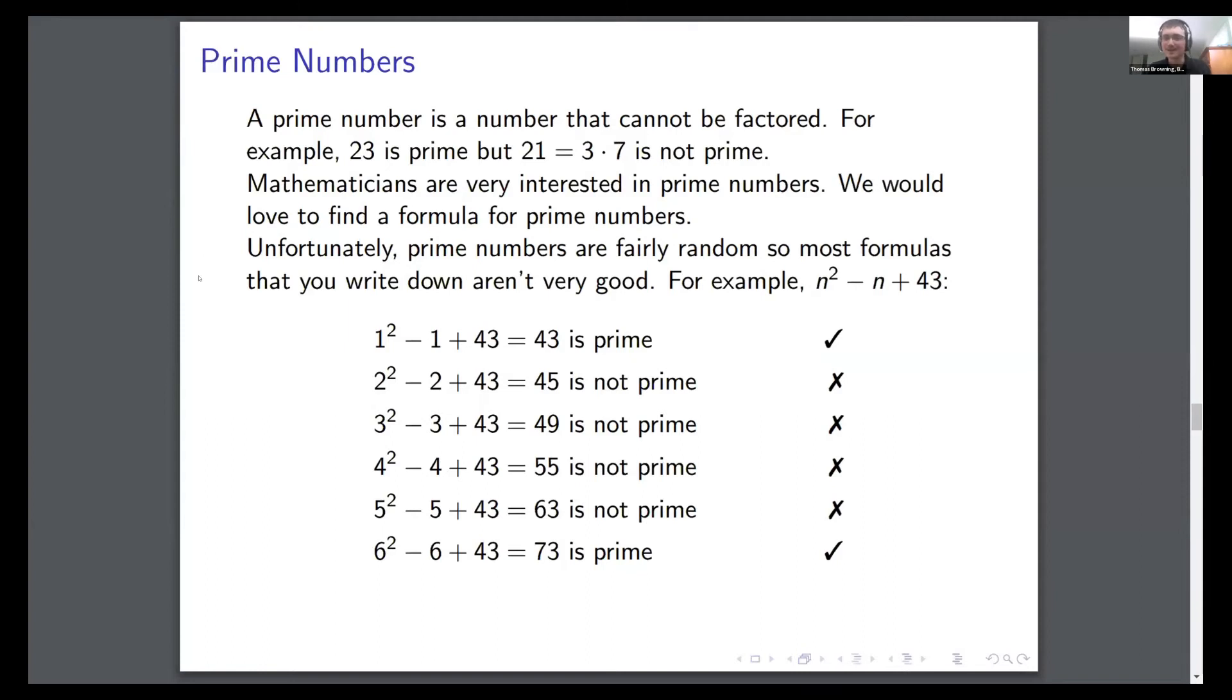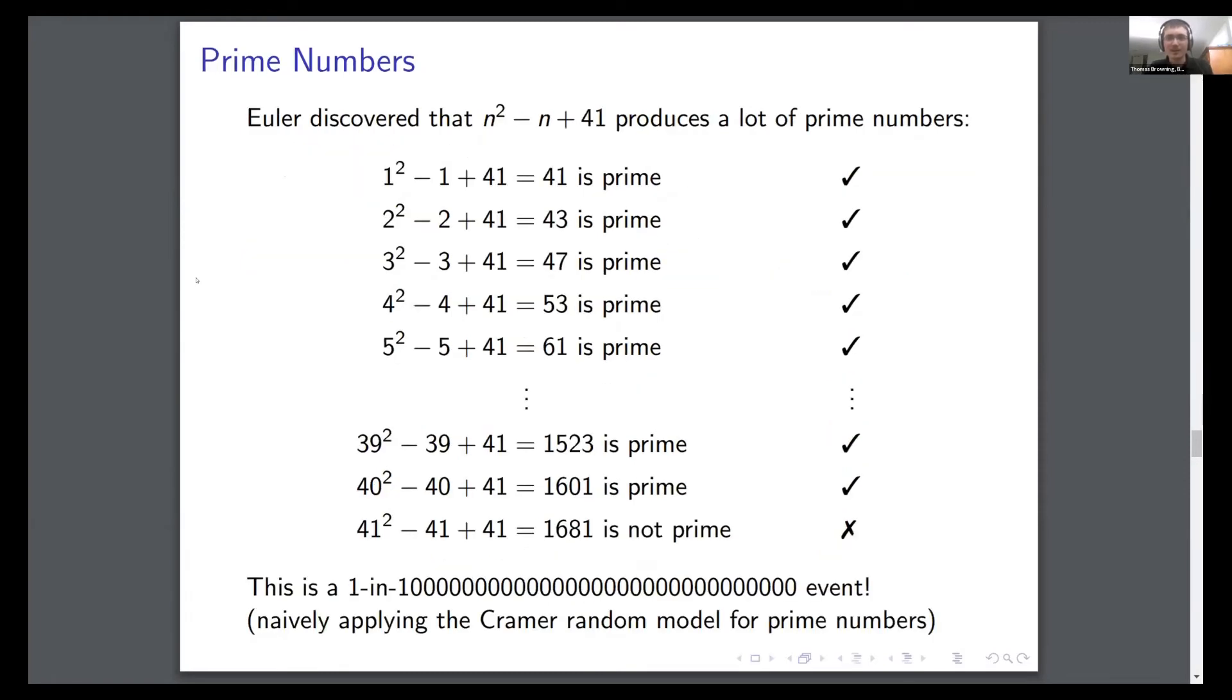Okay, so I want to take a brief digression. Remember these numbers, but I'll come back to them. The other part of this is these things called prime numbers, which you might have heard of - the numbers that can't be broken down under multiplication. So 23 is prime, 21 is not prime. And I'm a number theorist. I really love prime numbers. In general, mathematicians really love prime numbers. And we love to find a random formula.